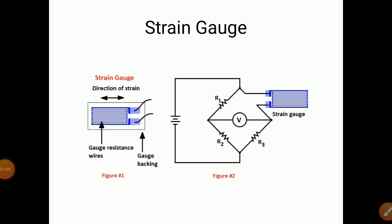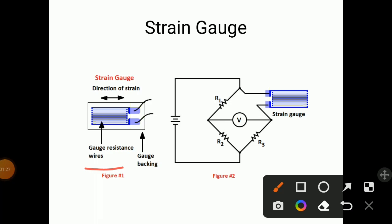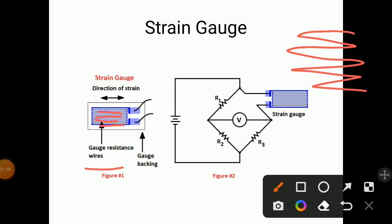This is the strain gauge diagram. Strain gauge consists of metal wire, called gauge resistance wires. These wires are wound in the form of a grid, and two terminals are taken out for measurement purpose. These wires are supported by a backing on both the top and bottom sides — a protective covering or backing. This is called a strain gauge.